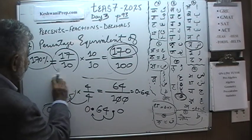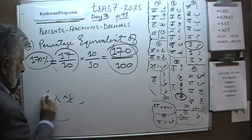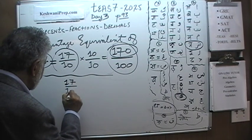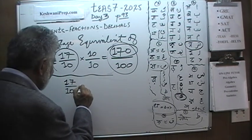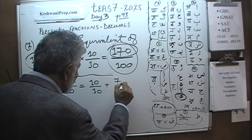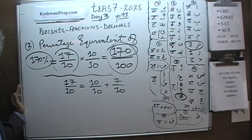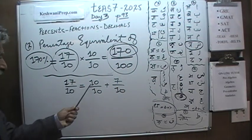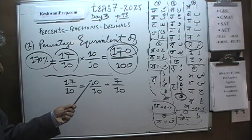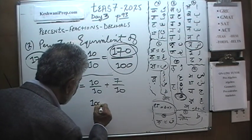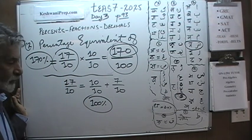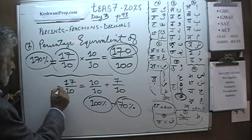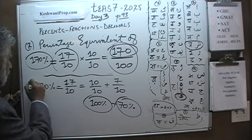Here's another way to look at the same problem. Would you agree that 17 over 10 is the same as 10 over 10 plus 7 over 10? Of course — 17 over 10 is 10 over 10 plus 7 over 10. But 10 out of 10 is 100%. And 7 out of 10 is another 70%. Therefore 17 out of 10 must be 100 plus 70%, which is 170%. Just like we found before.